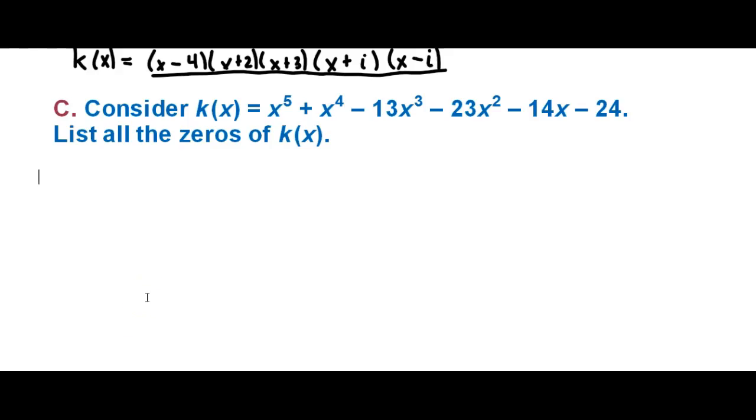Finally, part C asks you to list all of the zeros of k(x). We know k(x) equals these factors, so I'm not going to rewrite it out. But we can understand that x - 4 could be 0, so one of the zeros is 4, one is negative 2, one is negative 3, and then we have one at negative i and a zero at i. These are all of the possible zeros based on what I factored in part B with the linear factors.